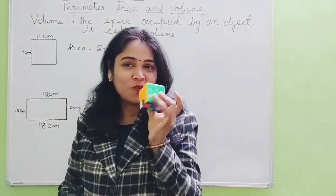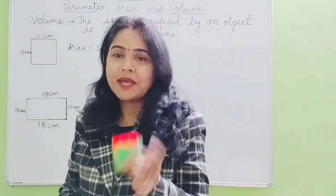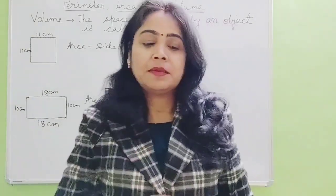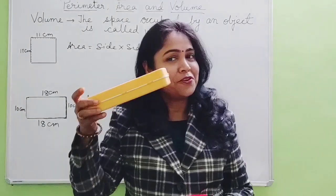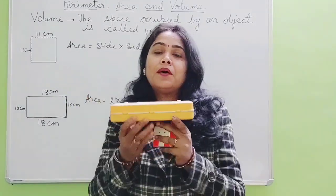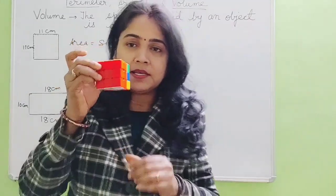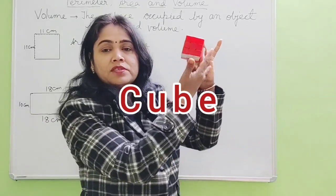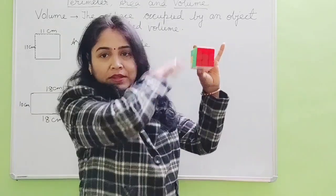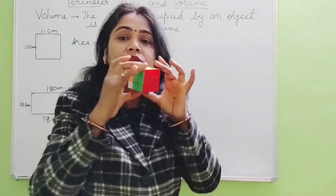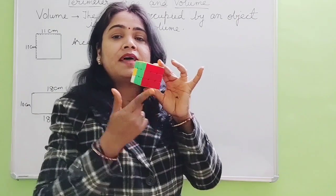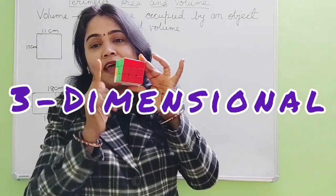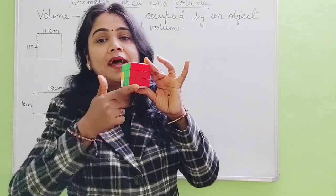Let's look at an object. Everybody has this cube — I know all the children love to play with this cube. So a cube is an example of a solid object. Similarly your pencil box, which all of you have, is an example of a cuboid. This cube has length, breadth, as well as height — it is a three-dimensional object.